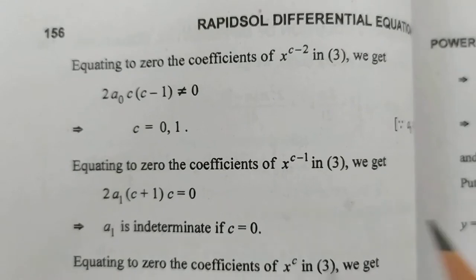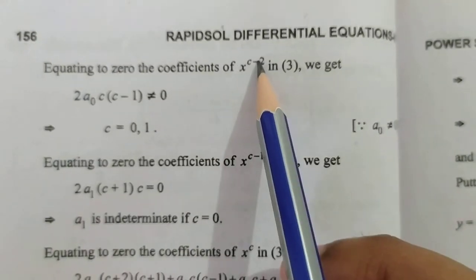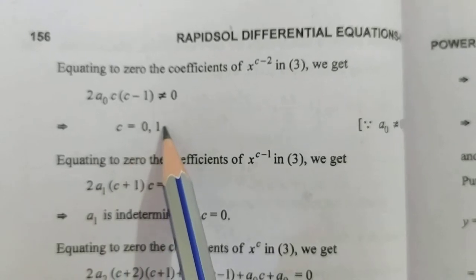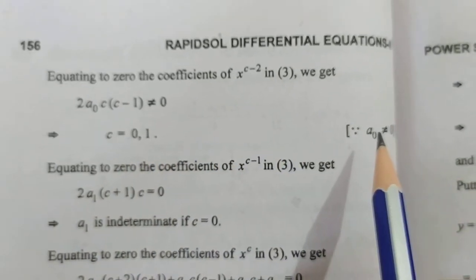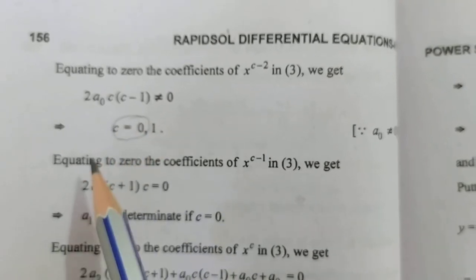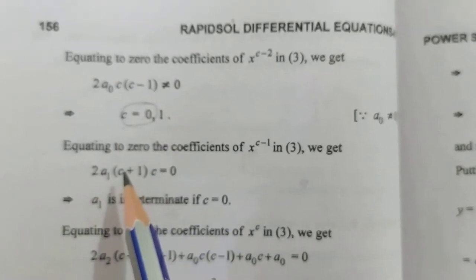Equating to zero the coefficient of x^(c-2) in equation 3, we get c = 0 or 1, because a₀ ≠ 0. We consider the value c = 0 because this value is the smallest.